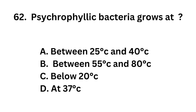Question number 62. Psychrophilic bacteria grows at: Option A, between 25 and 40 degree Celsius; Option B, between 55 and 80 degree Celsius; Option C, below 20 degree Celsius; Option D, at 37 degree Celsius.